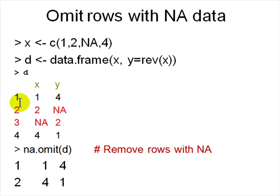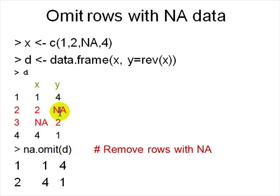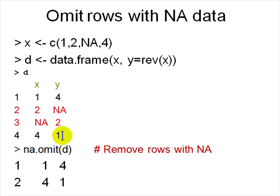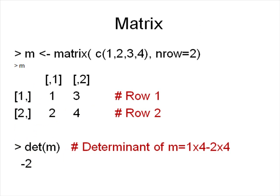In a data frame, handling missing values is important. If x is c(1, 2, NA) and you make a data frame d with y as the reverse of x, the NA is still in there. To remove NAs, use 'na.omit(d)' — the rows with NA values get removed, leaving only the complete rows.